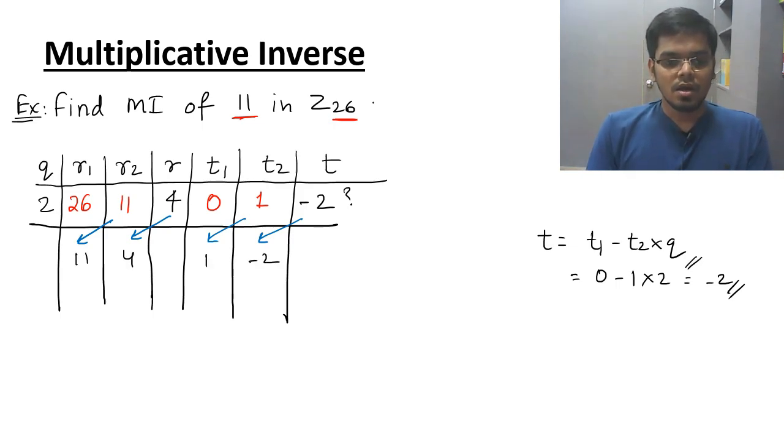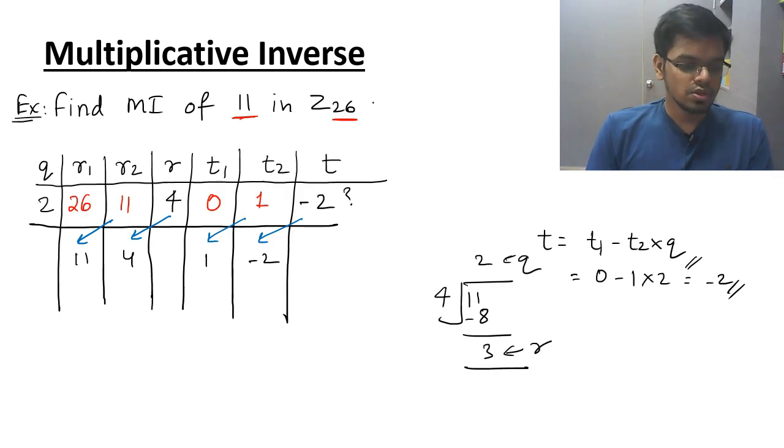Now how to find R? So you have to do 11 is divided by 4. Then 4, 2s are 8. So now the answer is 3. So this is quotient. This is remainder. The quotient is 2, the remainder is 3. You can find T using this expression. T is equal to T1 minus T2 into Q. So the answer comes out to be 5. This is my row 2 element.